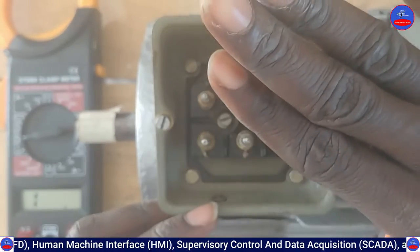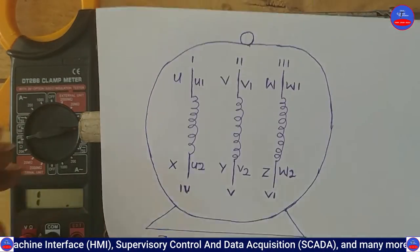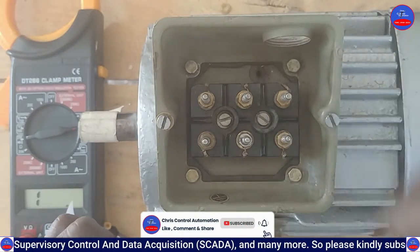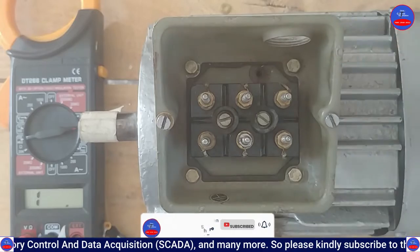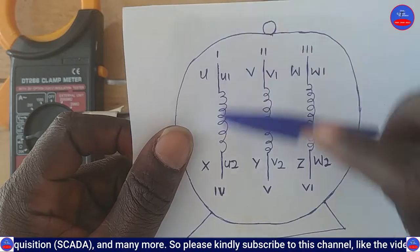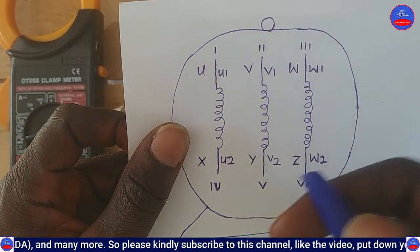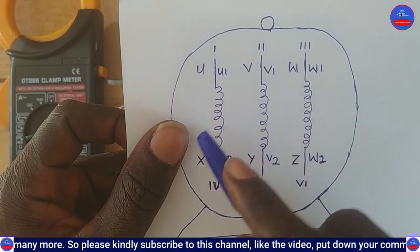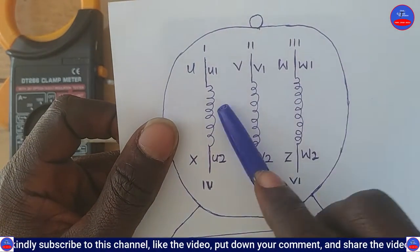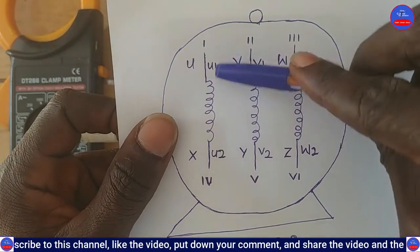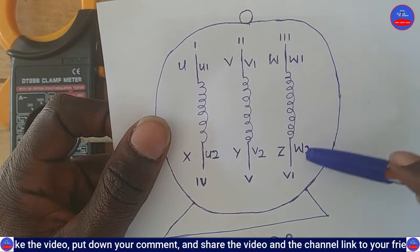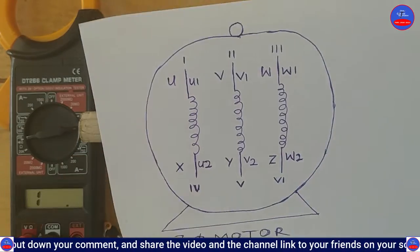Now we are going to identify the windings and test for continuity to know the winding continuity. We have U1 and U2. When we use the instrument to test, if there is no break you should get a reading between U1 and U2. The same applies to all of them. So we will test for U1 and U2, then V1 and V2, then W1 and W2. Now let's use the instrument to test.